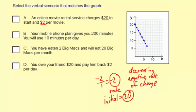Your mobile phone plan gives you 200 minutes, and you use 10 minutes per day. Well, the initial value here is 200, not 20, so this is definitely out.